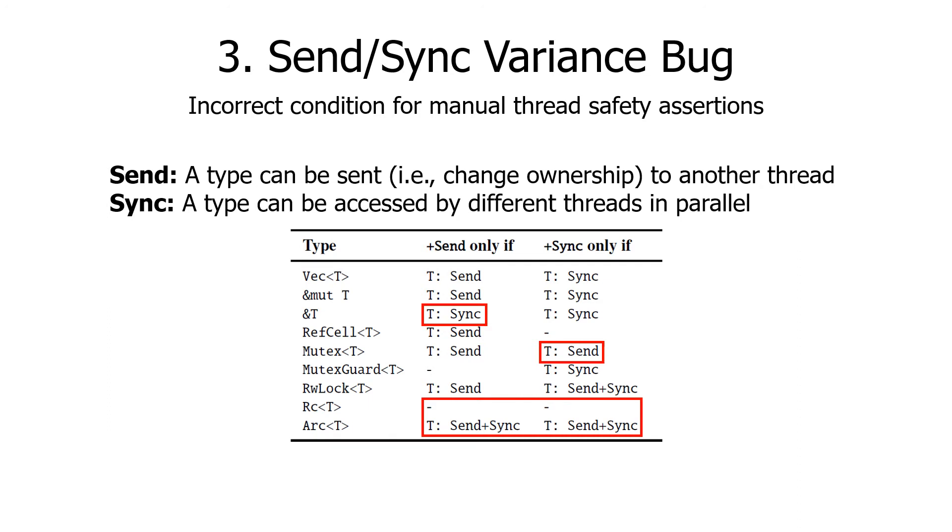As you can see here, the rules become easily complicated, and figuring out the correct rule is not an easy task. Rudra found the send-sync variance bug in MappedMutexGuard in the futures library. MappedMutexGuard takes two type parameters and needs to specify correct bounds for only one of them.